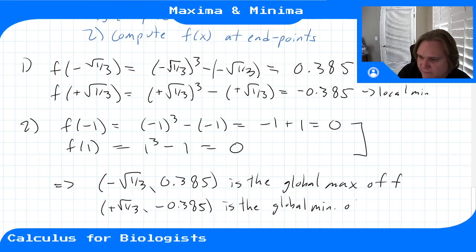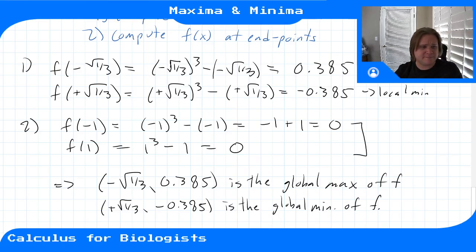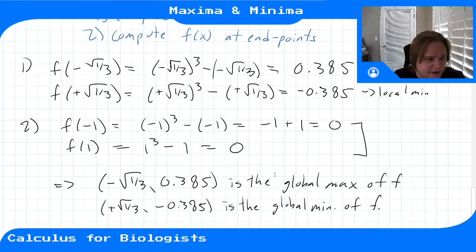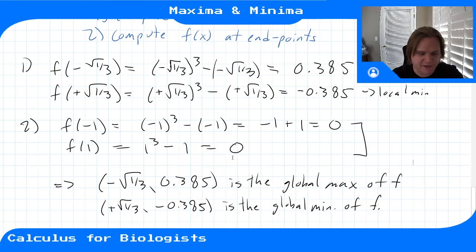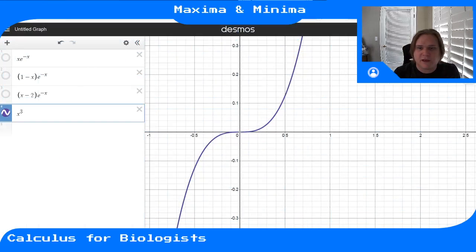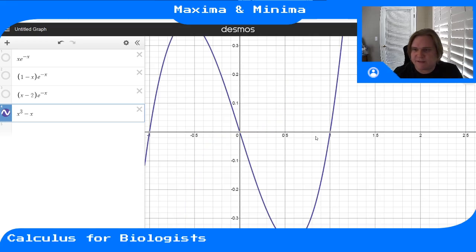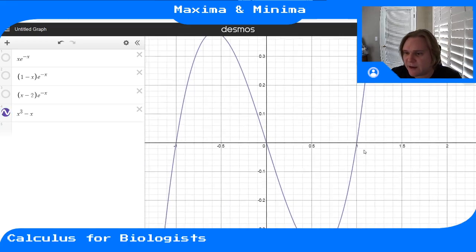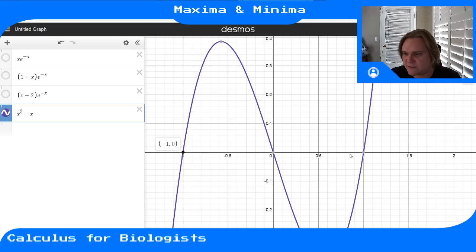So the local max and local min also happen to be the global max and global min on [-1, 1]. Looking at the graph of x³ - x between -1 and 1, the peak is the maximum and the trough is the minimum.